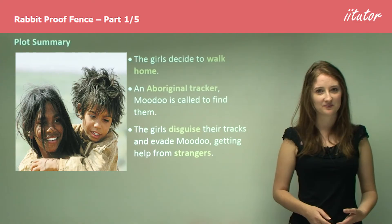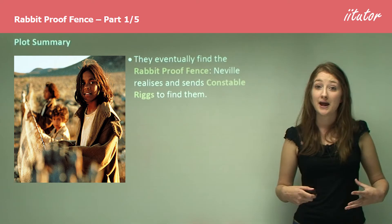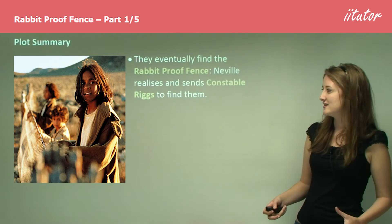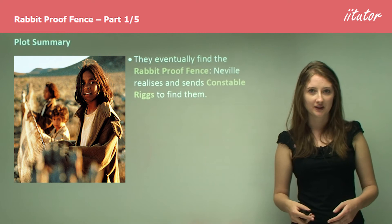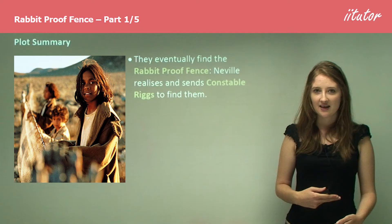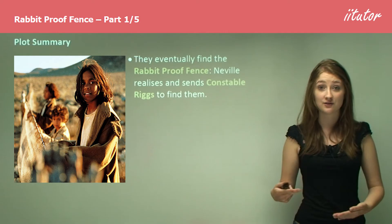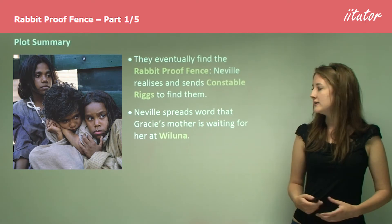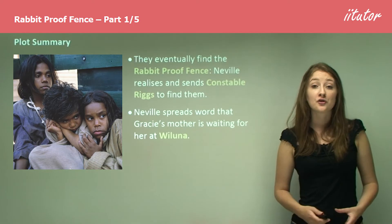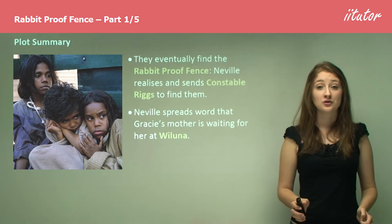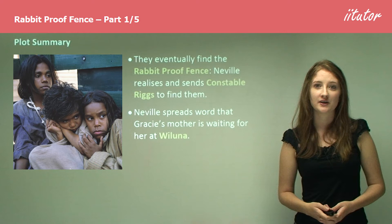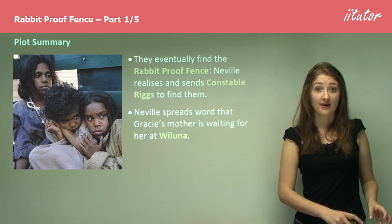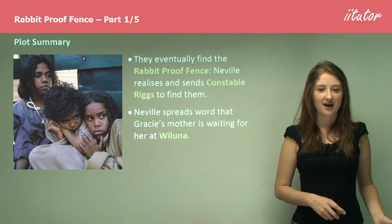They eventually find the rabbit proof fence. However, Neville — the Aboriginal protector — realises their idea and sends Constable Riggs to find them, adding yet another level of complication. They're really trying to find their old life again, but once again they're faced with the obstacle of the white invasion and the long-term consequences of white settlement. Neville spreads the word that Gracie's mother is waiting for them at Wiluna, hoping to lure the girls to that town, trap them, and put them back in the camp, as Moodoo the tracker was failing at this point.